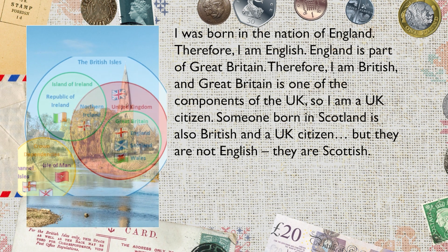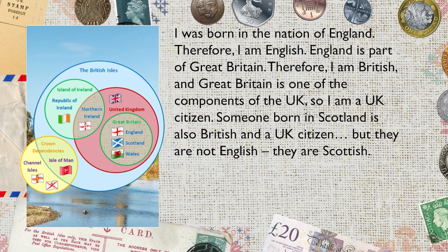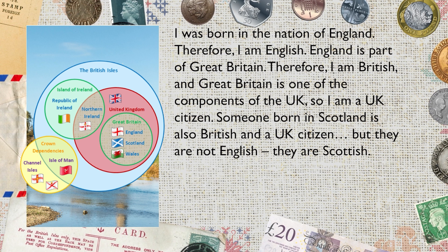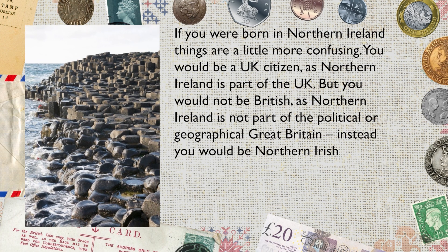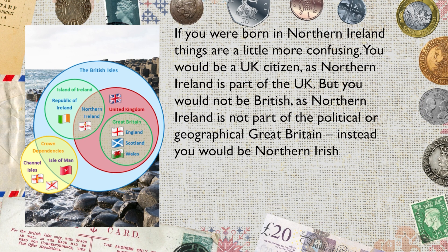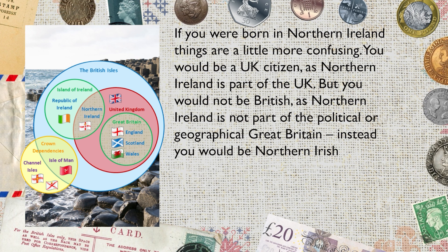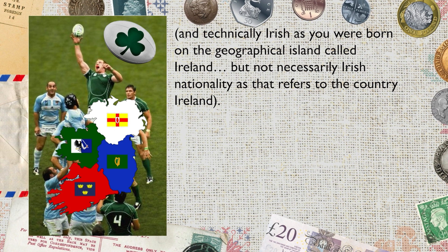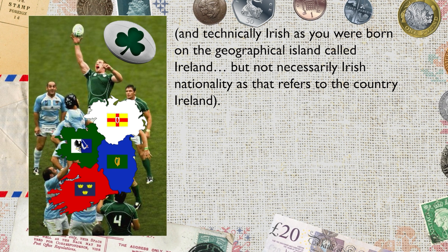I was born in the nation of England, and therefore I am English. England is part of Great Britain, therefore I am British. And Great Britain is one of the components of the UK, so I am a UK citizen. Someone born in Scotland is also British and a UK citizen, but they are not English — they are Scottish. If you were born in Northern Ireland, things are a little more confusing. You would be a UK citizen, as Northern Ireland is part of the UK, but you would not be British, as Northern Ireland is not part of the political or geographical Great Britain. Instead, you would be Northern Irish, and technically Irish, as you were born on the geographical island called Ireland. But you are not necessarily Irish nationality, as that refers to the country of Ireland.